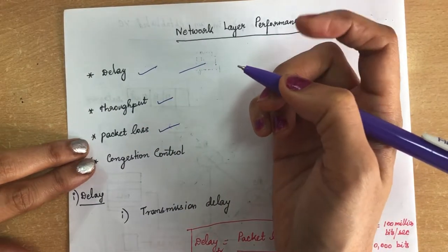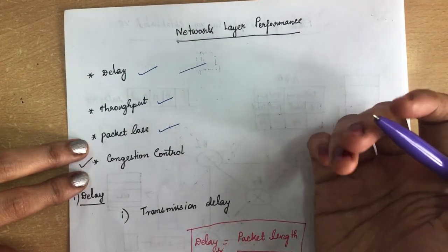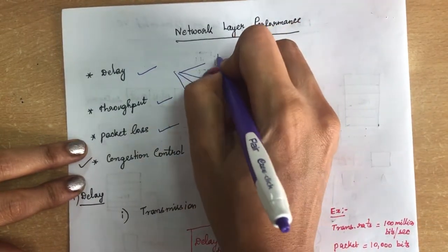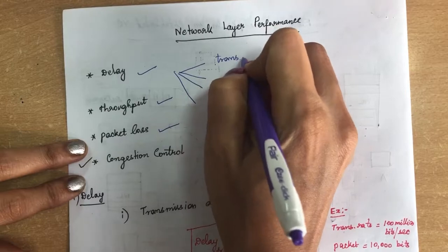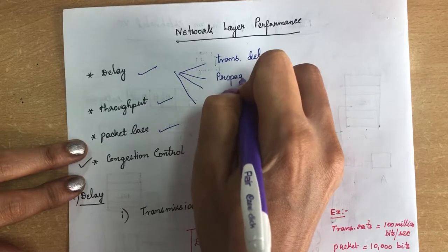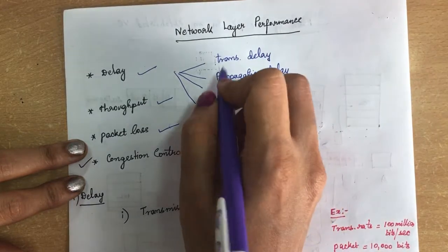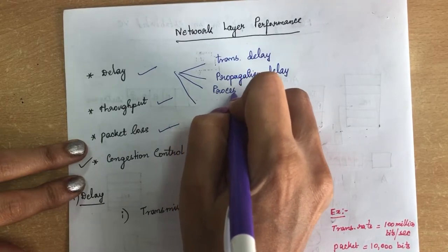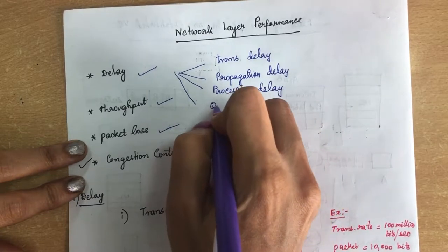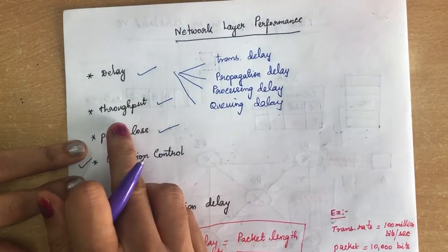Delay is nothing but whenever we are sending a packet from the sender to receiver, there will be an instantaneous delay. Delay can be divided into four types: transmission delay, propagation delay, processing delay, and queuing delay. We are going to see all these delays.